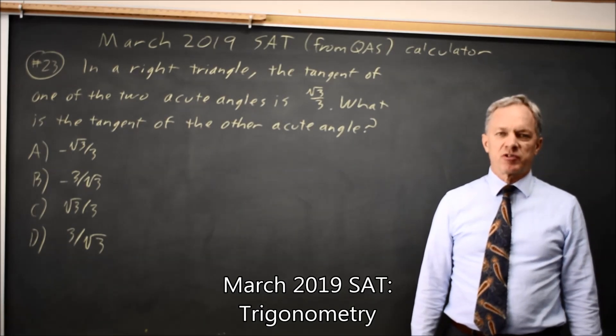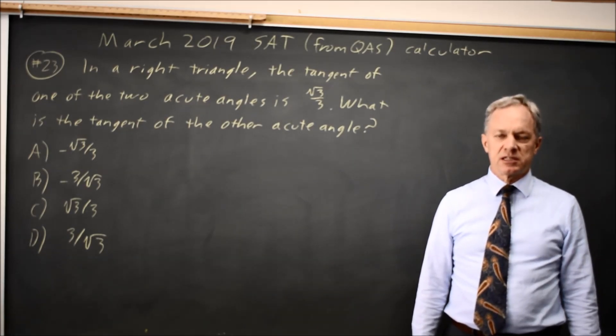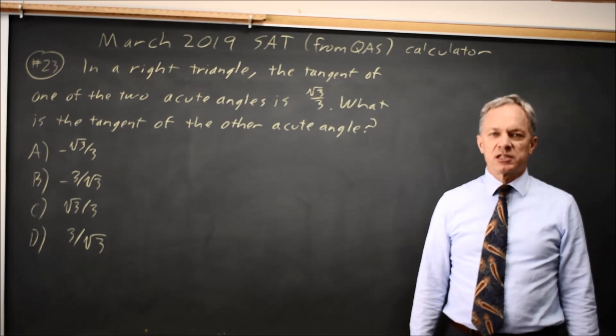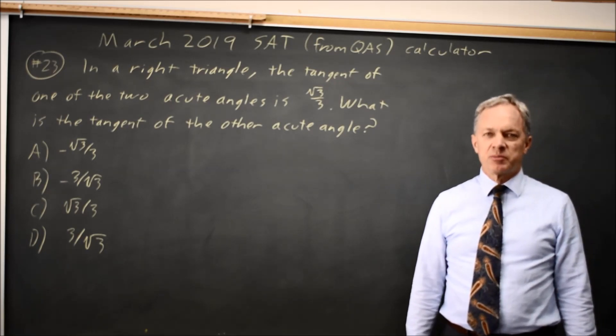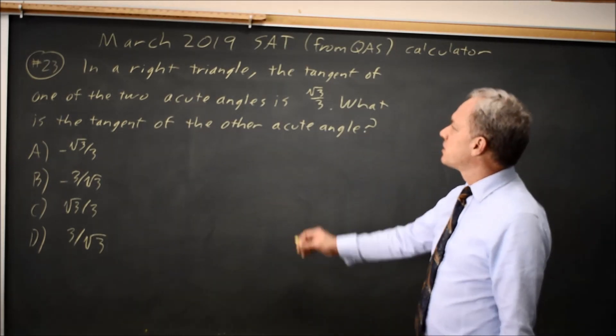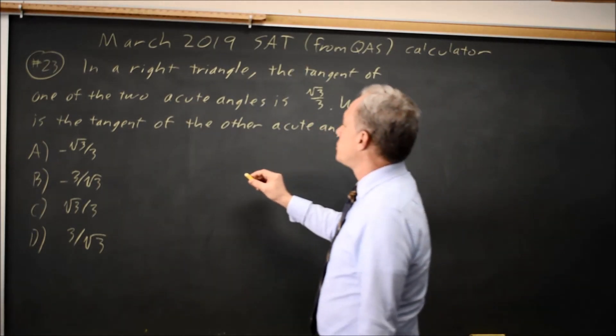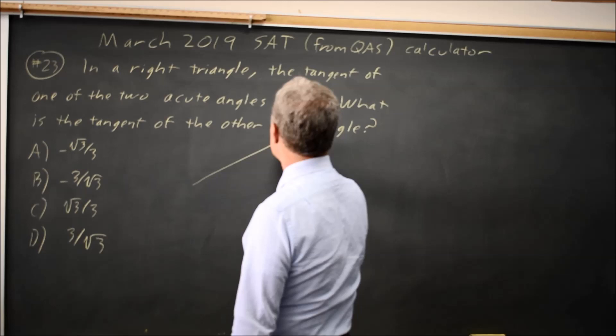This is calculator question number 23 from the March 2019 SAT exam. If you have not already tried this question, pause the video for a minute while you work through, and then we'll compare answers. College Board says in a right triangle, the tangent of one of the two acute angles is root 3 over 3.